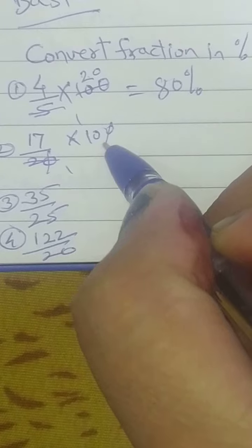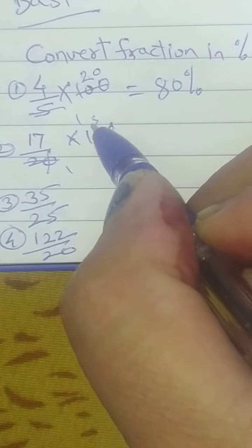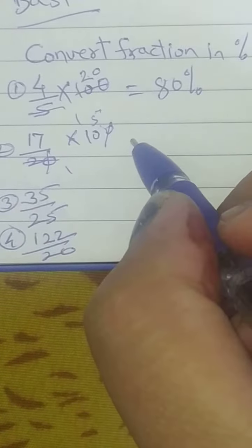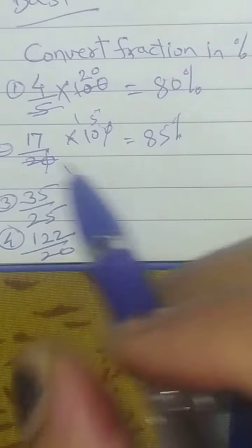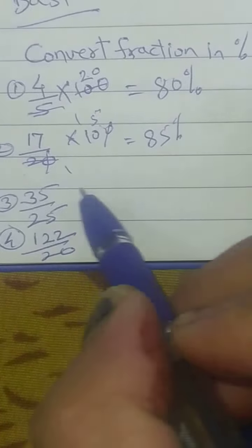Same thing, here also multiply by 100. 20 ones or you can do just zero zero cancel, 2 ones and 2 fives, 17 fives.